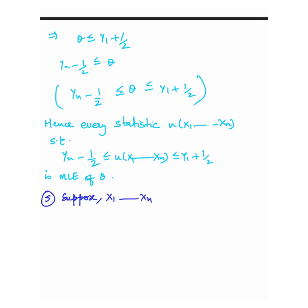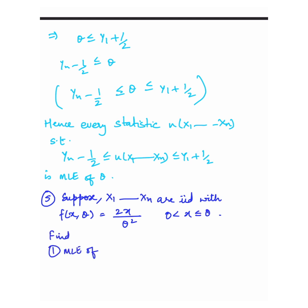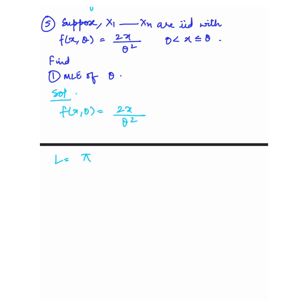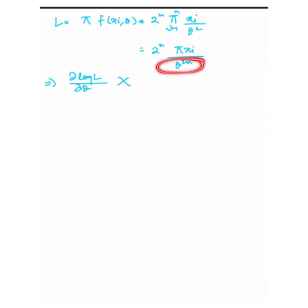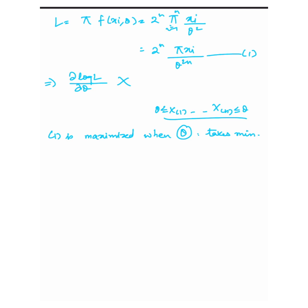Question 5: suppose x1, x2, ..., xs are iid with pdf f(x; theta) equals 2x upon theta squared, where x is from 0 to theta. We have to find the MLE of theta. Again, differentiating log L with respect to theta does not yield useful information. We observe that the likelihood function is maximized when theta takes its minimum permissible value. The minimum value that theta can take, given the support, is the nth order statistic. So theta MLE equals x(n).